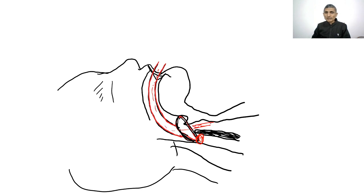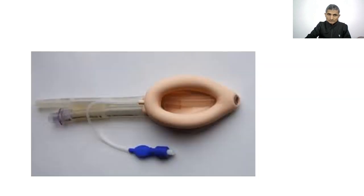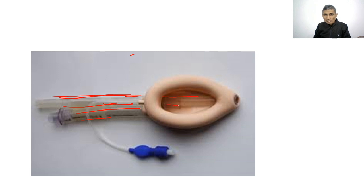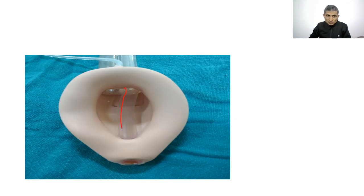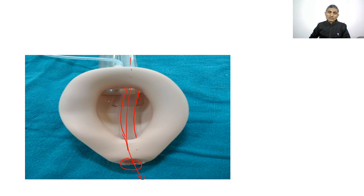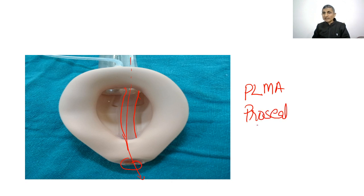This is a modification of the classical LMA — the ProSeal LMA (PLMA). In addition to the airway tube, there is a parallel gastric drainage tube that runs along the floor of the mask and opens at the tip. Through this tube, a nasogastric tube can be passed and suction can be performed, providing access to the esophagus and stomach. The ProSeal LMA provides a better seal than the classical LMA.